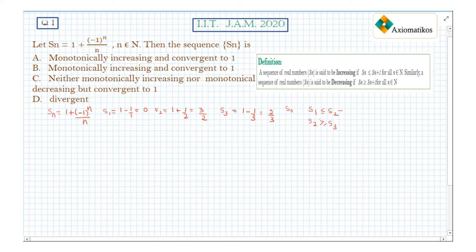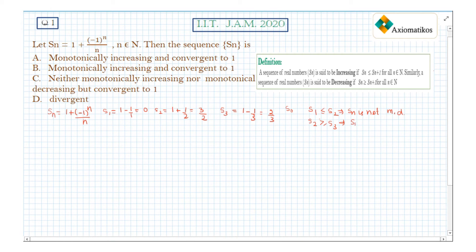From here, we can say that Sn is not monotonically decreasing because for a decreasing sequence, S1 should be greater than or equal to S2. Similarly, Sn is not monotonically increasing either.